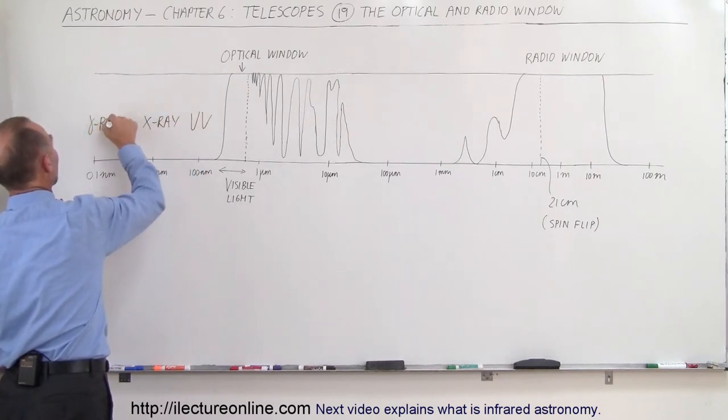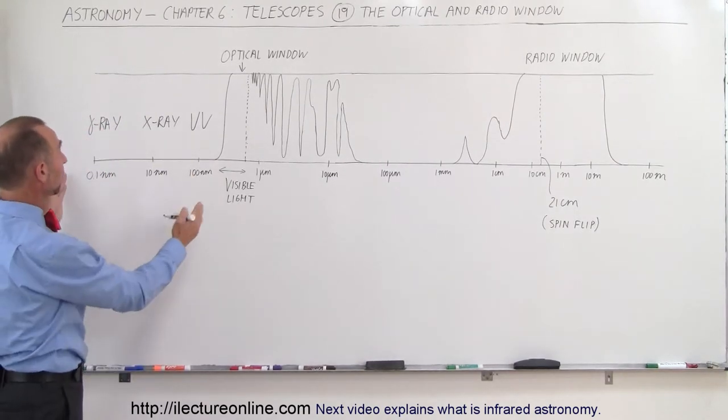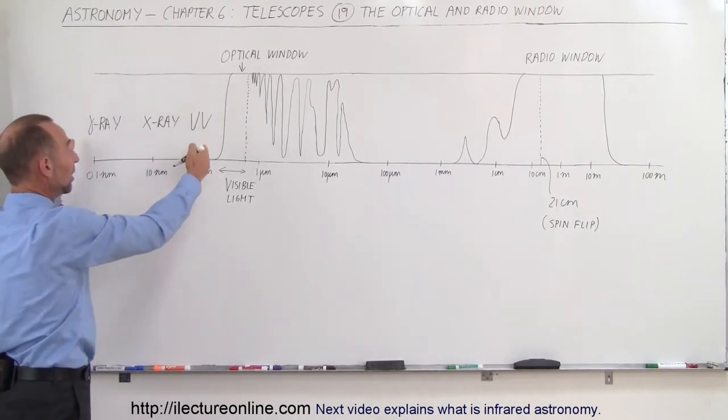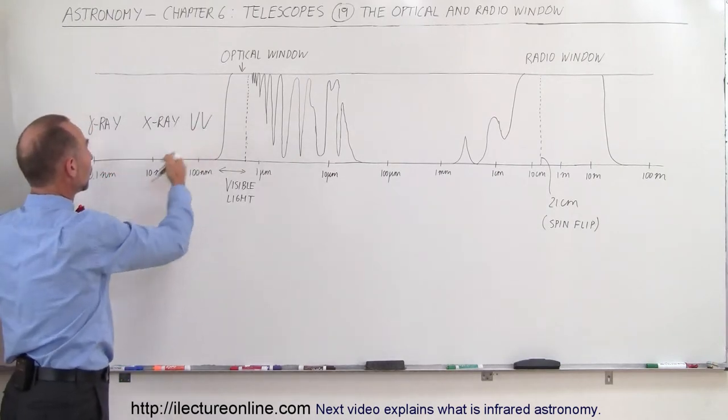Luckily for us, the atmosphere is completely opaque to those three types of radiation. If it wasn't, we would be in a lot of trouble because that radiation brings in so much energy that life really wouldn't be possible if it made it through to the surface of the Earth.